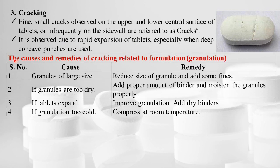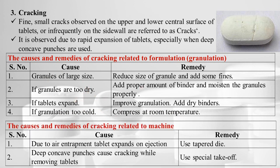Causes and remedies of cracking related to granulation: if granules are of very large size, reduce the granule size and add some fines. If granules are very dry, add a proper amount of binder and moisten the granules properly. If the tablet expands very rapidly, improve the granulation and add dry binders. If the granulation is too cold, compress the tablets at room temperature.